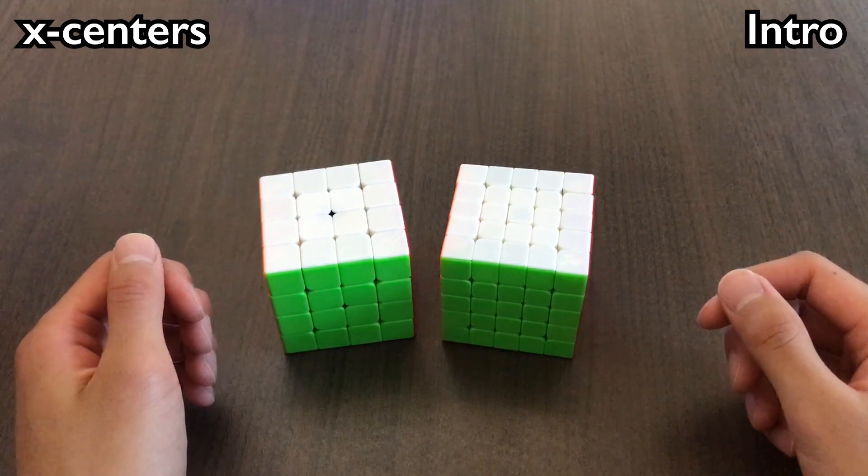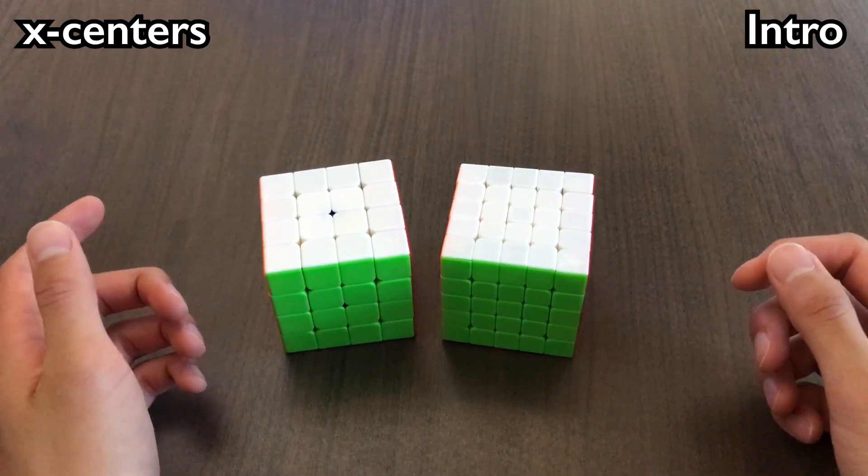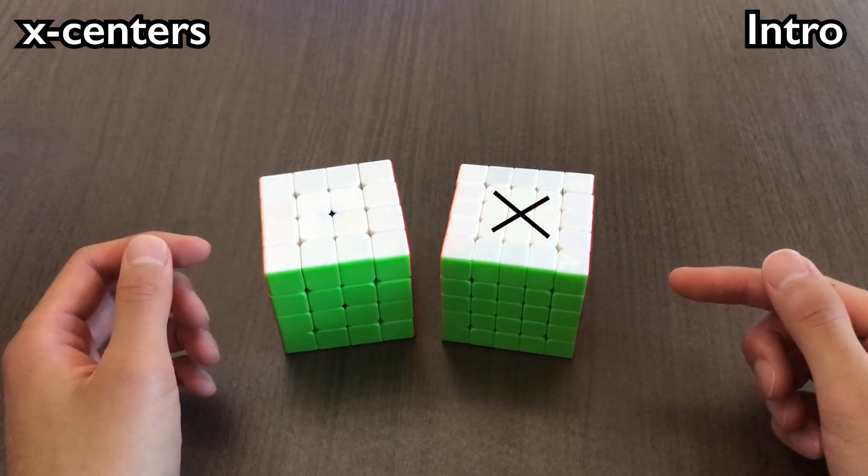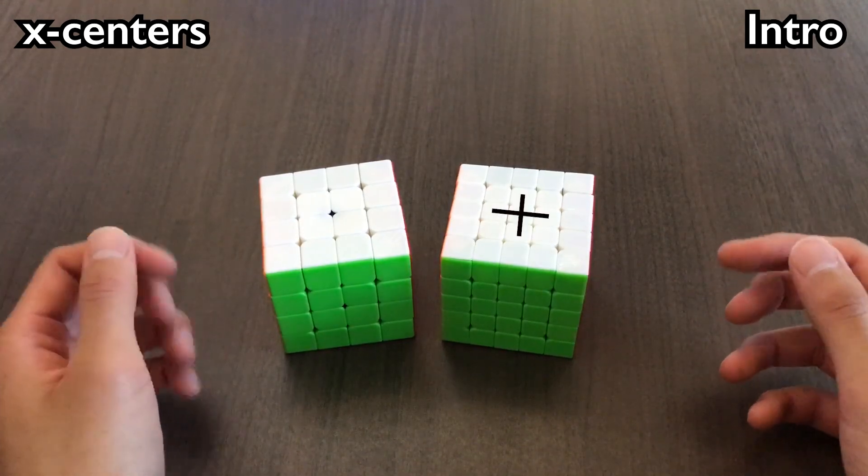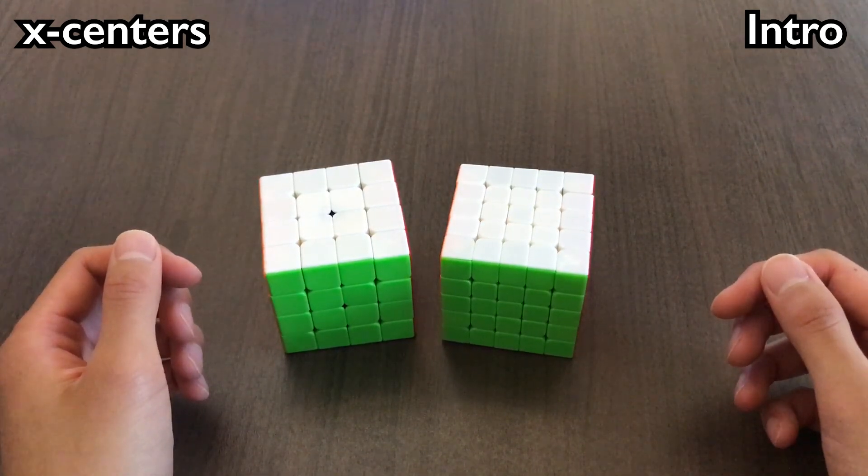X centers are the same as centers on 4-blind. If you're wondering why they're called X centers, it's because they make an X shape. Plus centers are centers that form a plus shape. A 4x4 only has X centers.